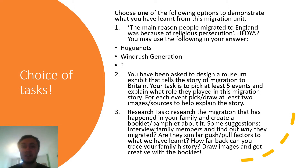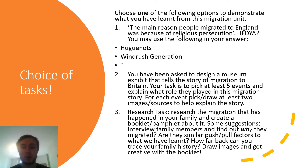The second task is slightly different — it's a bit more of a creative task where you've got to imagine you've been asked to design a museum exhibit. You need to pick at least five events or groups of people who have migrated to Britain and explain the role that they played in the migration story, with two images or sources for each event. The final task is a research task — a more personal one — where you look into your own family history and create a small booklet or pamphlet about it.